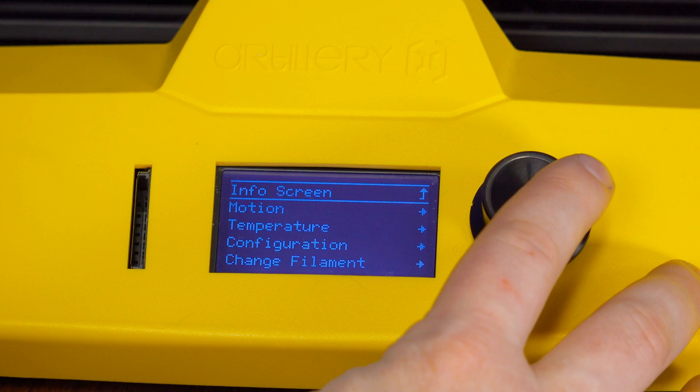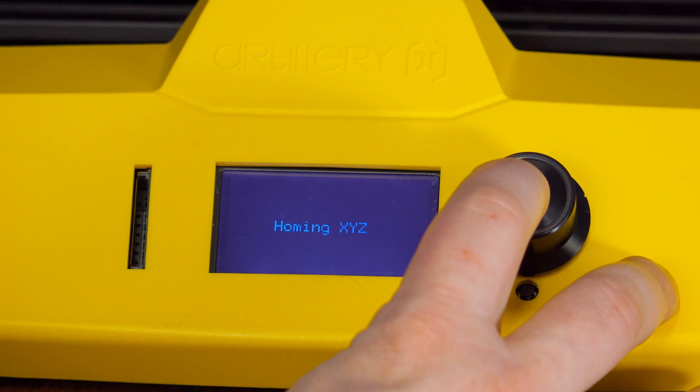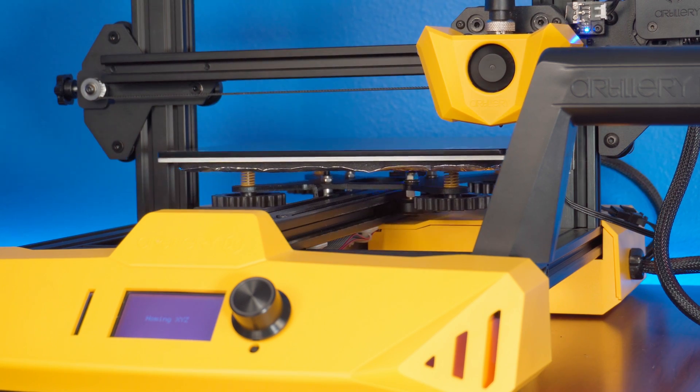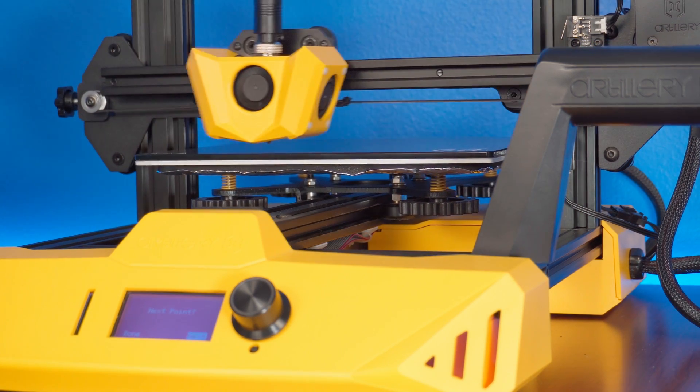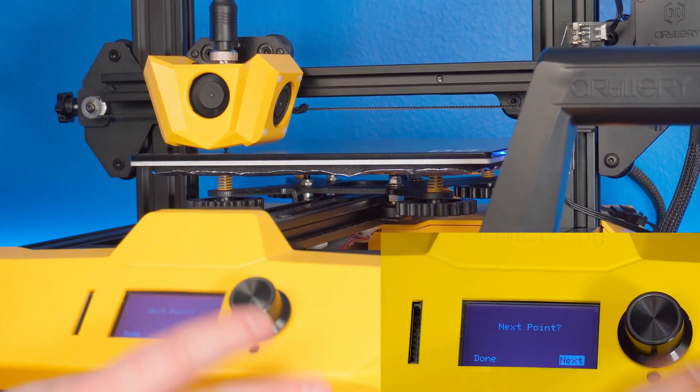First, the build plate needed to be leveled. I followed the instructions and went through the level corners feature in the bed leveling menu. The manual does a really good job at explaining how to do this, even noting the type of paper to use and recommending going through the process a few times to ensure the best results.